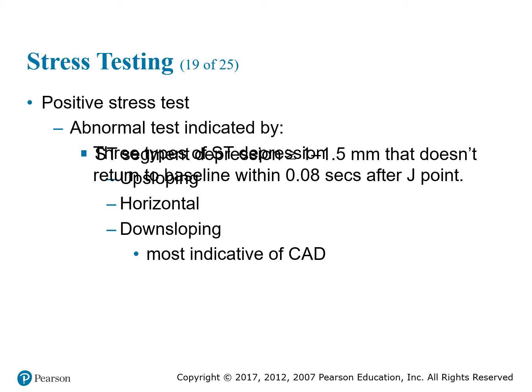ST depression can be of three different types: up-sloping, horizontal, and down-sloping. In terms of cardiac implication, up-sloping is the least indicative of coronary artery disease. Horizontal is intermediate — not bad, but not good. Down-sloping is the most indicative of CAD.